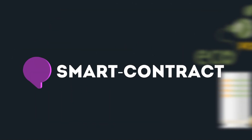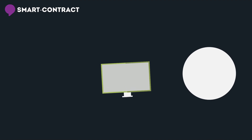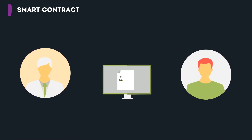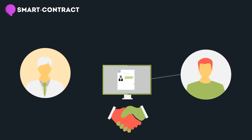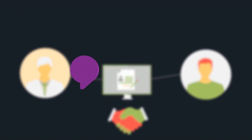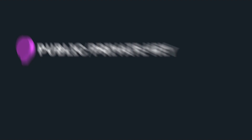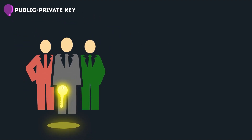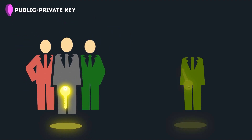Smart contract: a two-way smart contract is an unalterable agreement stored on the blockchain that has specific logic operations, akin to a real-world contract. Public or private key: a public key can be utilized by any party, and a private key is only specifically known to the owner.